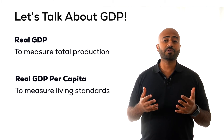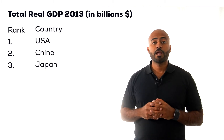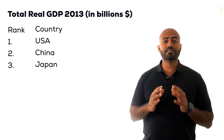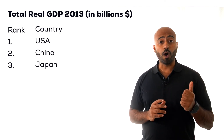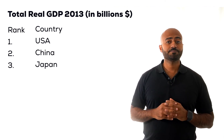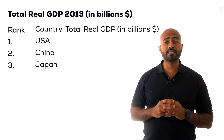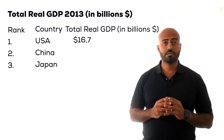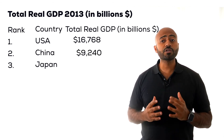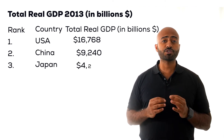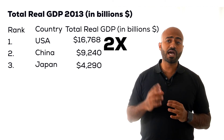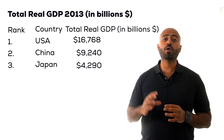Let us look at this example of how these measures are actually used. This is information based on 2013 data. The three top ranked economies by real GDP are: one, the United States; two, China; three, Japan. The real GDP of the United States is $16.7 trillion. The real GDP for China is $9.2 trillion and the real GDP of Japan is $4.2 trillion. The gap between the US and China is almost two times, and between the US and Japan is almost four times.